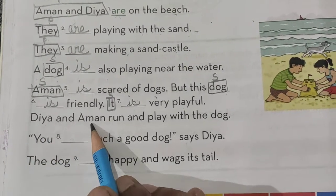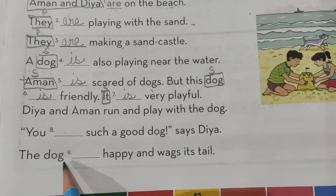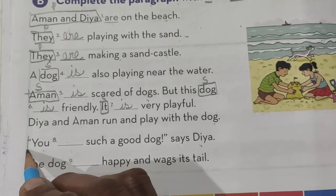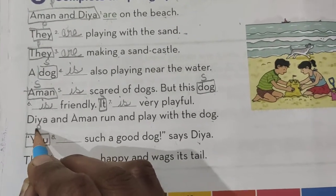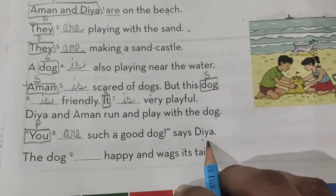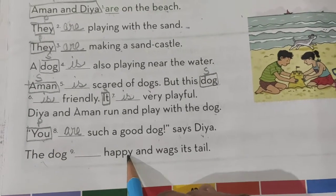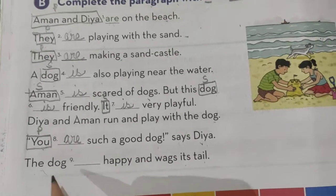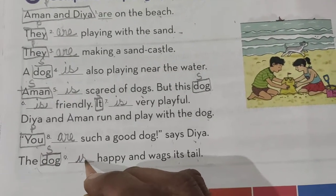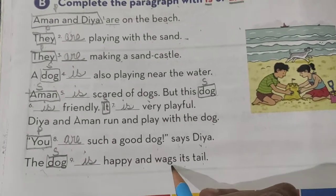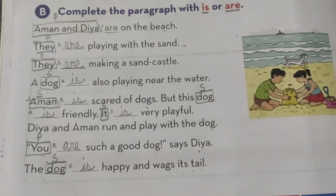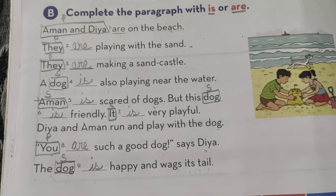Next: 'Dia and Amman run and play with the dog.' 'You dash such a good dog,' says Dia. Here, 'you' is a plural pronoun, so you are such a good dog, says Dia. Now: 'The dog dash happy and wags its tail.' 'Dog' is a singular noun, so for singular nouns we use 'is' — the dog is happy and wags its tail. I hope you have understood the concept. This is all for today; we will continue in the next session. Thank you, children.